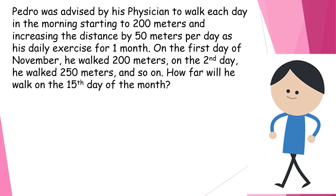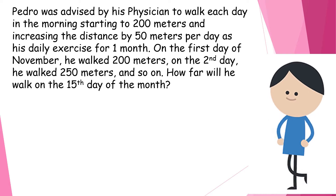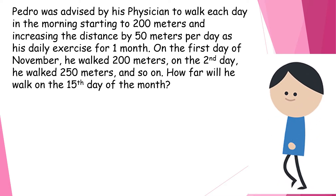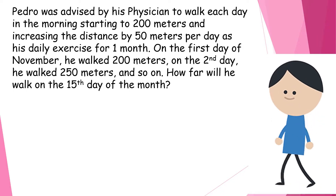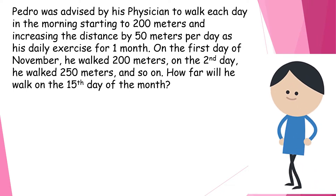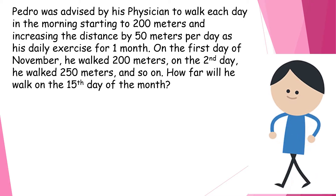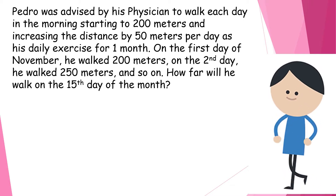Let's have our first problem. Pedro was advised by his physician to walk each day in the morning, starting at 200 meters and increasing the distance by 50 meters per day as his daily exercise for one month. On the first day of November he walked 200 meters, on the second day he walked 250 meters, and so on.